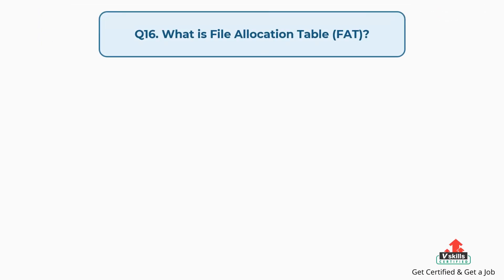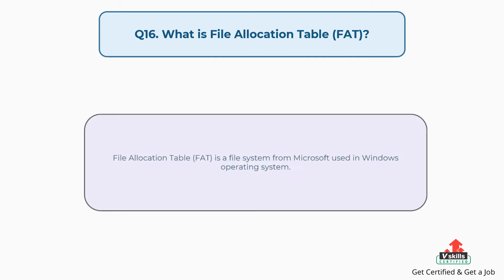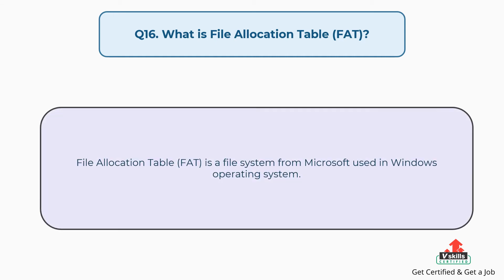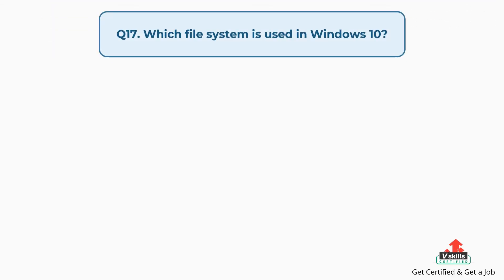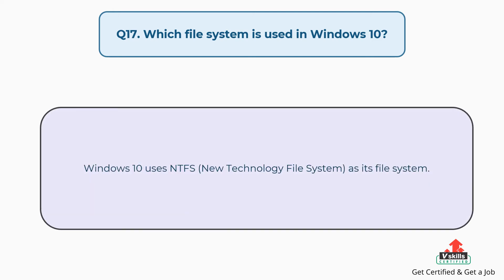Question number sixteen: what is file allocation table? The answer is, file allocation table is a file system from Microsoft used in Windows operating system. Question number seventeen: which file system is used in Windows 10? The answer is, Windows 10 uses NTFS as its file system.